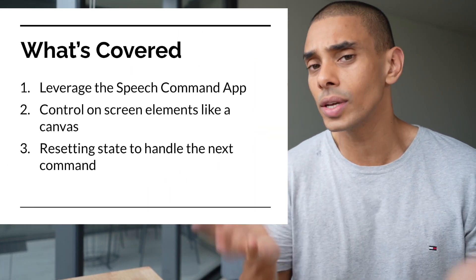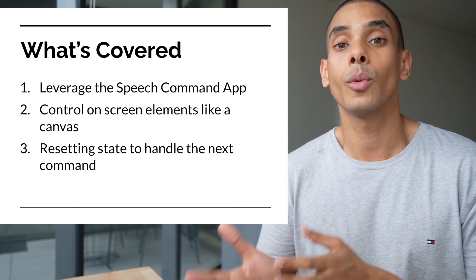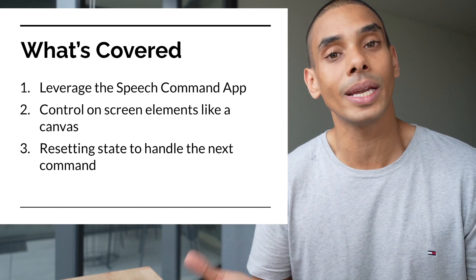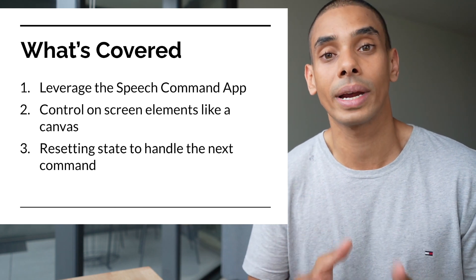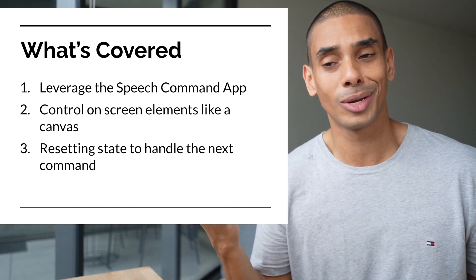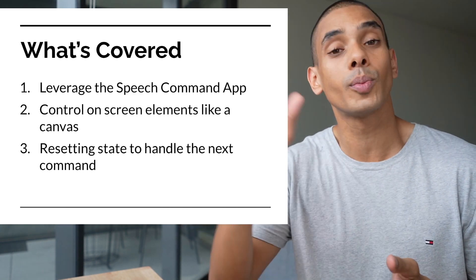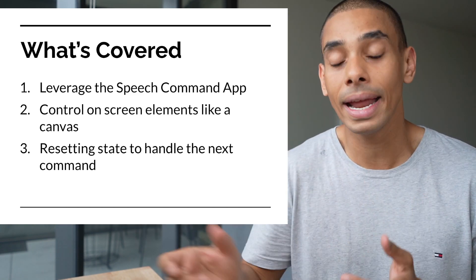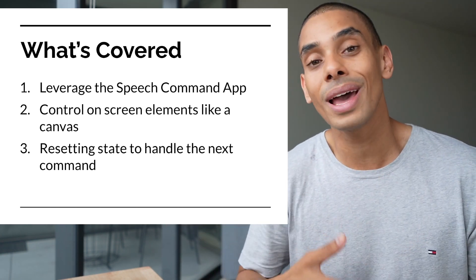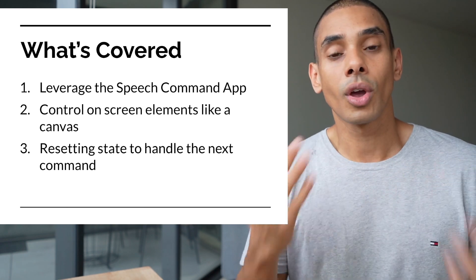In this video we're going to be covering three key things. First, we're going to leverage our existing speech command recognition app that we built in a previous video. Then we're going to use speech commands to actually control on-screen elements — we'll have a ball on screen that we can control just using our voice. Finally, we're going to handle state and reset it so we can pass through multiple of the same command. If I say 'right,' I want it to move right, and I want to be able to say 'right' again so it continues moving.